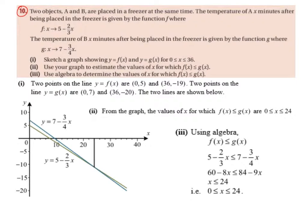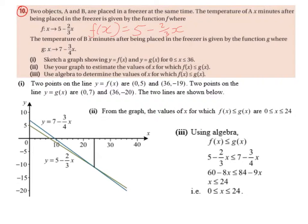So we have two functions: f of x maps to 5 minus 2 over 3x, and g of x maps to 7 minus 3 over 4x. We can use our f of x function in the calculator's table function. We would input f of x equals 5 minus 2 over 3x, start at 0, end at 36, and do steps of 1, which gives us all the coordinates we need. Similarly for g of x, we put f of x equals 7 minus 3 over 4x, starting at 0, ending at 36, in steps of 1.